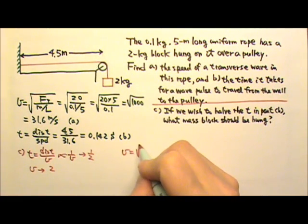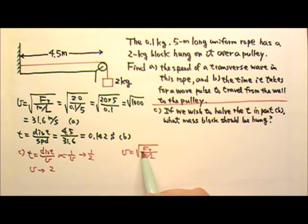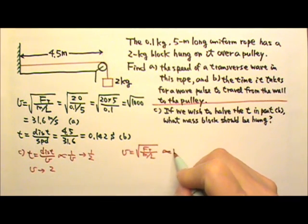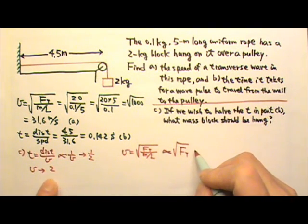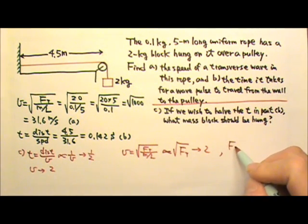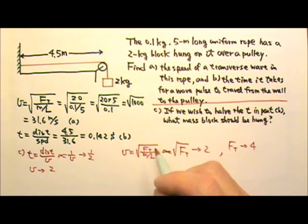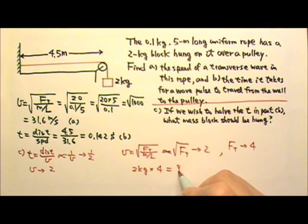The speed of a rope is the square root of tension divided by mass per unit length. When we change the mass hung over the pulley, we change the tension. The mass per unit length of the rope stays the same, so speed is proportional to the square root of tension. Since we want the speed to double, the square root of tension must double, meaning the tension must be quadrupled — squaring both sides gives 2 squared equals 4. We used to have a 2 kg block, so now we want 4 times the mass: 8 kg.